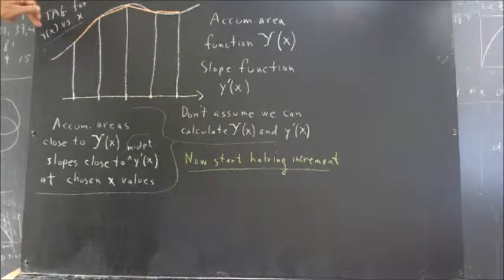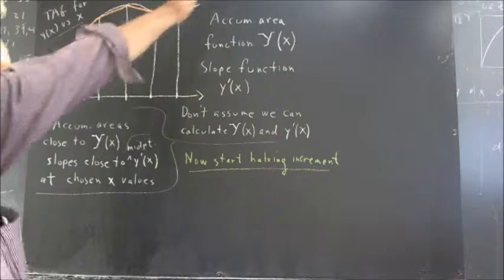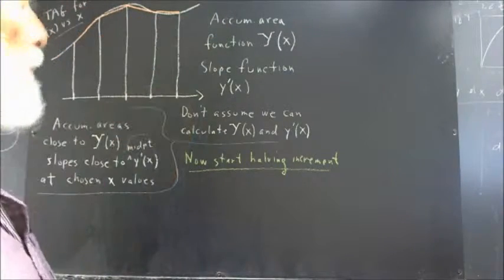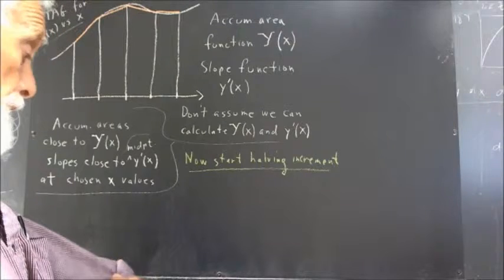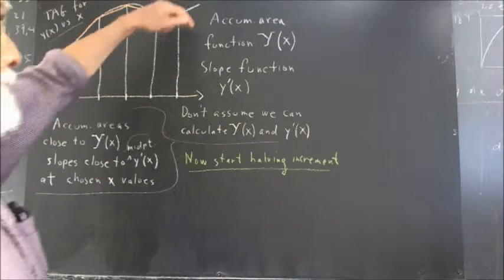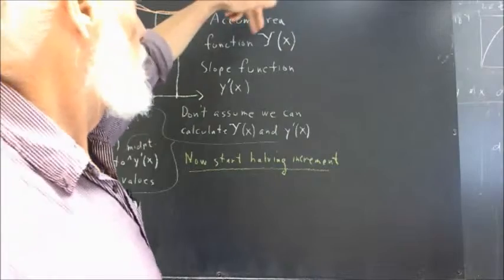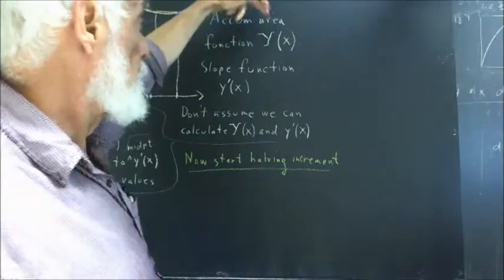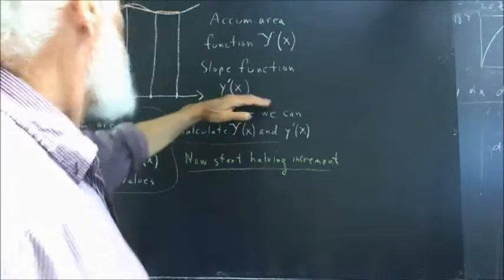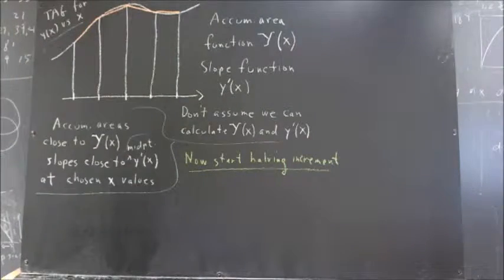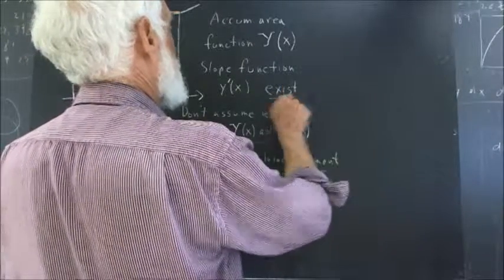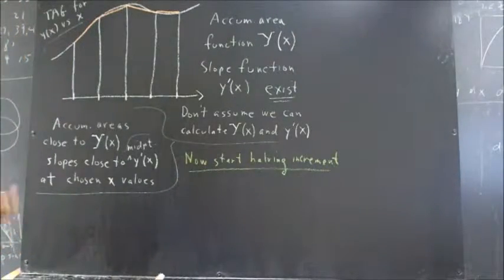Let's assume that we have a trapezoidal approximation graph for y of x versus x, where this represents any function. If it's a smooth function — and I'm not going to define exactly what I mean by that, that's something for a rigorous calculus course — I want to give you a background here. The accumulated area function, for which I use the capital fancy y of x, and the slope function y prime of x — those functions exist for a reasonable function.